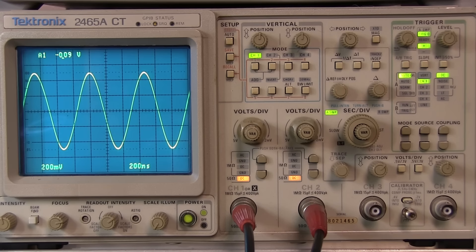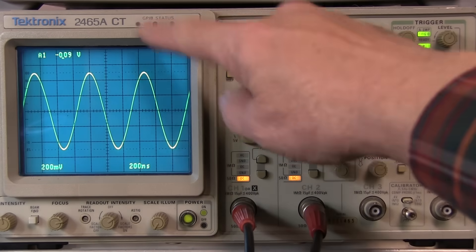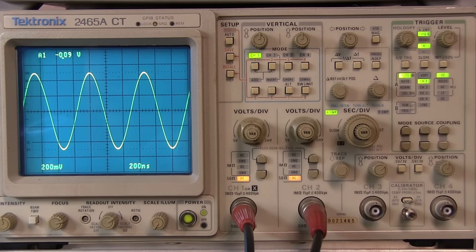In today's short video, we're going to take a look at the cursor functions on the 2400 series of Tektronix scopes. This includes the 2445, 2465, and 2467.